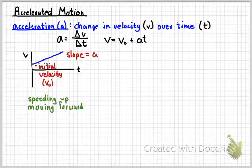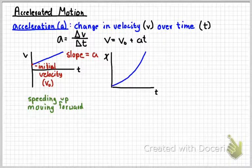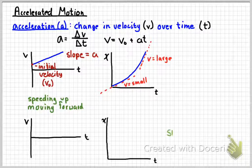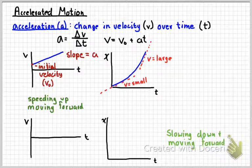This graph shows something speeding up and moving forward — the velocity is positive and increasing. If we graph that on a position-time graph, it will curve upward. Drawing a tangent line at the beginning and at the end shows you're going from a small velocity to a large velocity. When interpreting position-time graphs for objects speeding up or slowing down, use a tangent line to see the slope. An object that's slowing down and moving forward would look like a curve with decreasing slope.